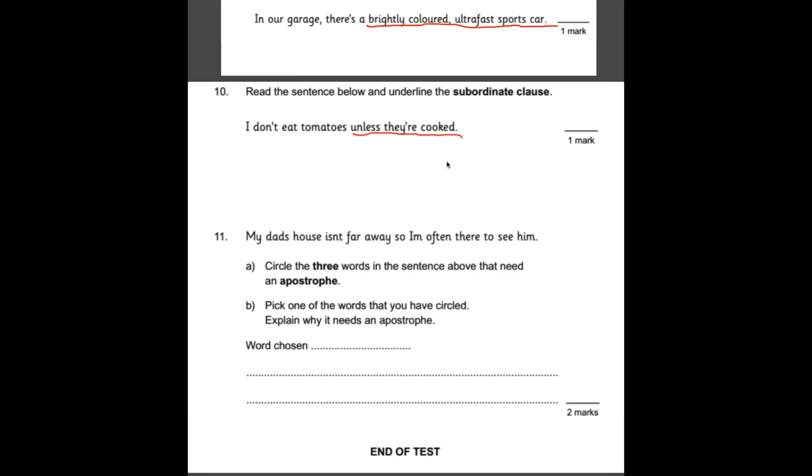Number eleven, my dad's house isn't far away. So I'm often there to see him. Circle three words in the sentence above that need an apostrophe. So the first one would be dad's. Because it's saying my dad's house. The house belongs to the dad. So it's a possessive apostrophe. The next word is isn't. That is a contraction. It's short for is not. Finally, the last one is I'm. Remember, I'm is also a contraction. It's short for I am. So it needs an apostrophe there.